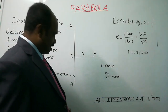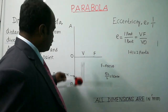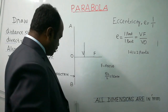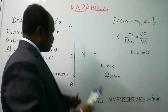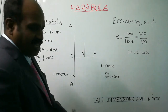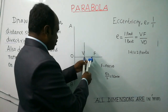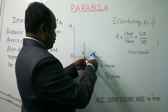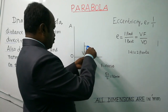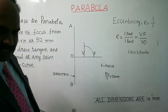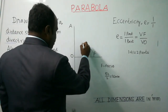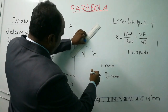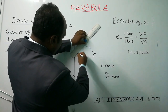Take your drafter scale and draw a vertical line passing through point V. Then take your compass, take VF as radius, and keeping V as center, draw an arc. Where the arc intersects with the vertical line passing through V, mark that point as Z. Join O and Z using a drafter scale and extend that line further.